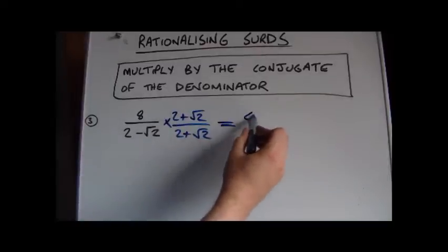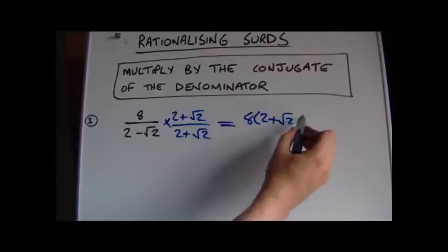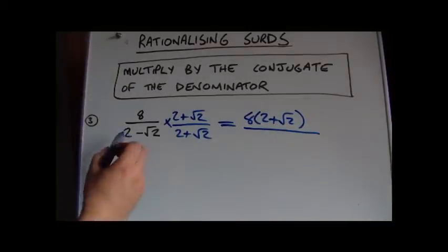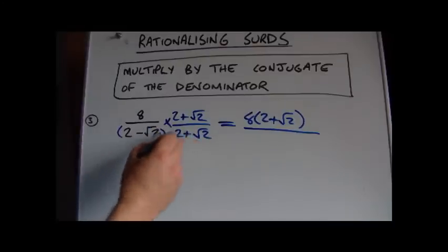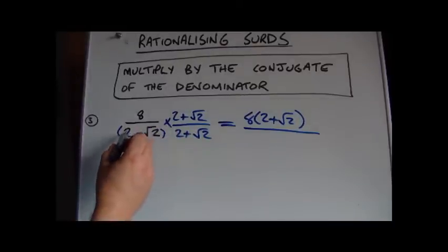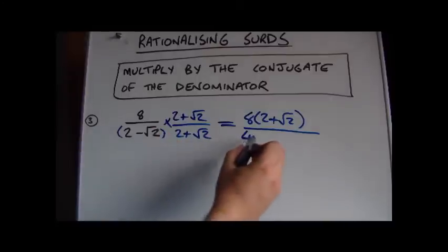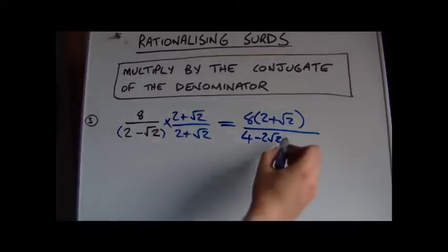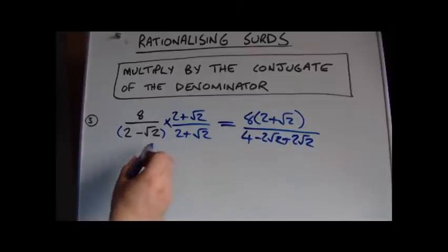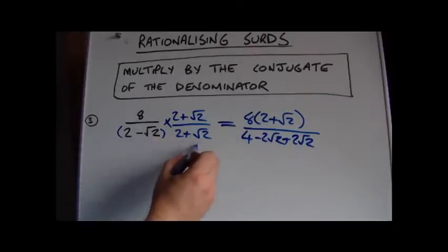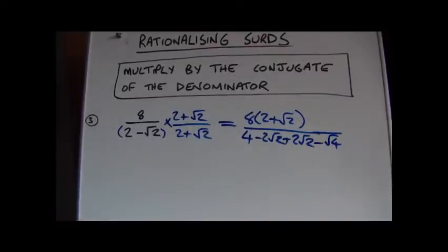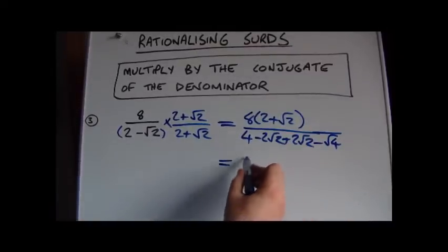On the top we've got 8 times (2 plus root 2) — we'll leave it like that for now. On the bottom we expand the brackets: 2 times 2 gives 4; the inner terms multiply to give minus 2 root 2; the outer terms give plus 2 root 2; and the last terms give minus root 4, because it's root 2 times root 2.